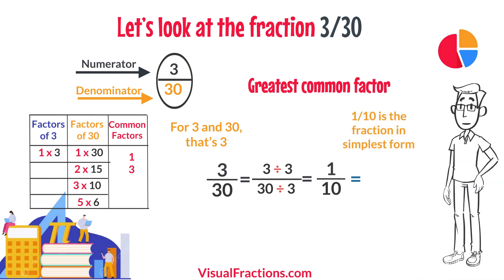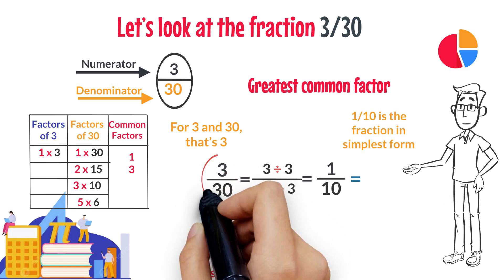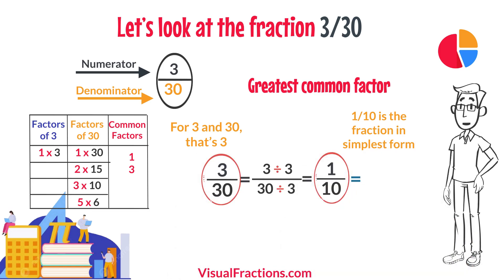It's important to note that both the original fraction 3/30 and the simplified fraction 1/10 have the same decimal value, which is 0.1. This shows that although their appearance may change, their value remains consistent.